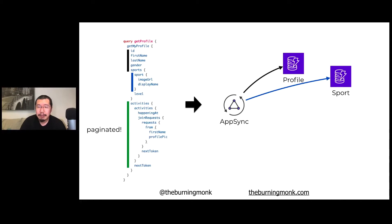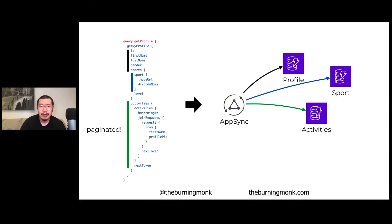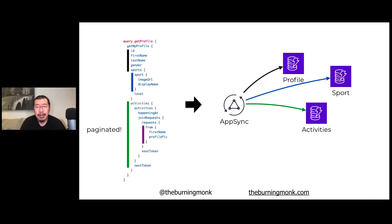For my activities, since I can have many, when I fetch my profile I really just need the first page of upcoming activities. AppSync runs a query against the activities table where the data is stored with my user ID as the hash key and the timestamp of the activity as the range key, so we can easily get a page of activities in descending order. Since other people may ask to join my basketball match, I also want to fetch any requests people have made to join my activities. We only store the user ID in those requests, and to display them in the UI we expand those IDs into users' public profiles using a nested resolver that gets data from the profile table.